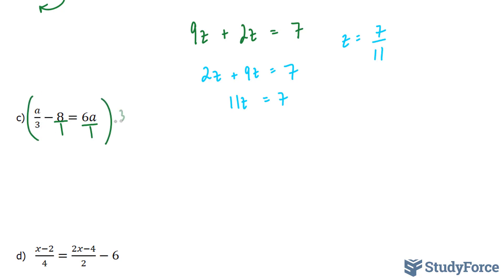So to get rid of this fraction, we multiply this whole thing by 3. You're going to take this 3 and multiply it to each term. And by multiplying this 3 to the fraction term, that 3 disappears. Let's start by multiplying 3 × a/3. 3 × a/3 is the same thing as 3a/3, which leads you to simply a. 3 × -8 is -24, and 3 × 6a = 18a.